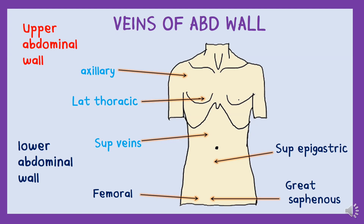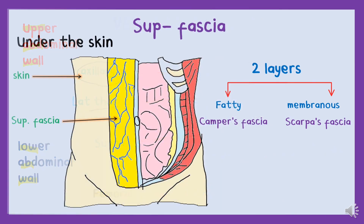Now, how is blood drained from the skin of the abdomen? For venous drainage, we divide the abdomen into two parts: the upper abdominal wall and the lower abdominal wall. Superficial veins form a network around the umbilicus, and this network of veins radiates and passes blood to the lateral thoracic vein, eventually draining into the axillary veins and finally into the superior vena cava. Below the level of the umbilicus, blood is drained into the superficial epigastric veins and great saphenous veins, and finally into the femoral vein.